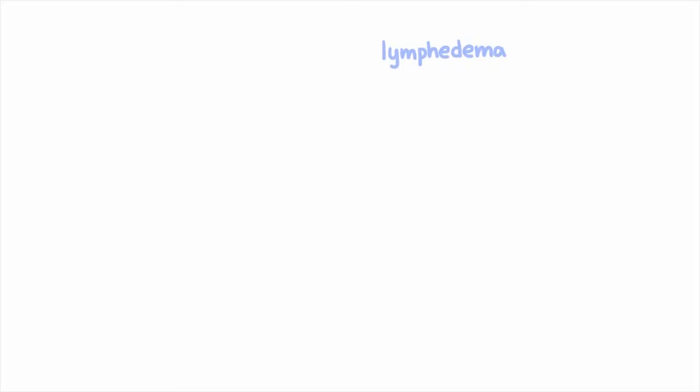Now as we mentioned earlier, you develop lymphedema when you have a poorly functioning or damaged lymphatic system and fluids and toxins build up in your system.